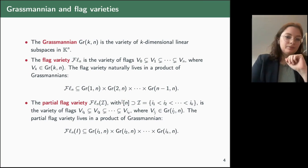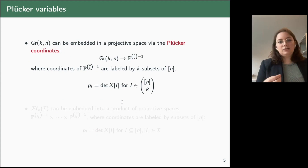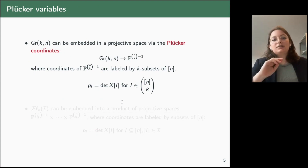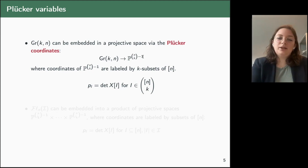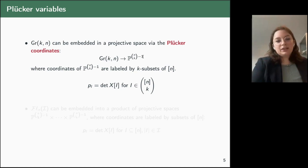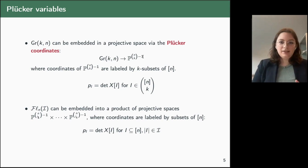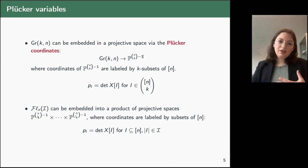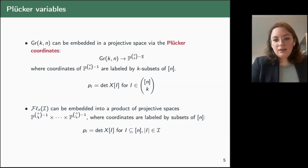The Grassmannian has Plücker coordinates, which means we can embed it in projective space of dimension (n choose k) minus one, sending each coordinate to a determinant of a minor of a corresponding matrix of variables. The kernel of this map is the Plücker ideal, which is the ideal defining the Grassmannian inside projective space. We can do the same for partial flag varieties by taking the embedding inside the product of Grassmannians via the Plücker embedding.